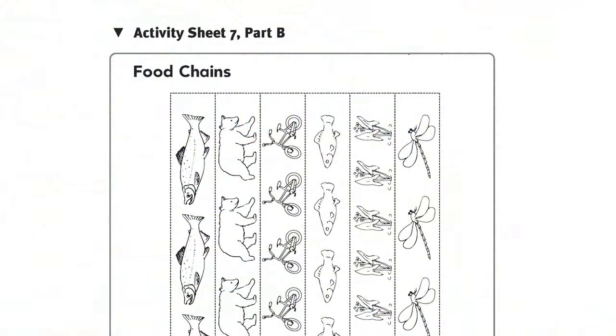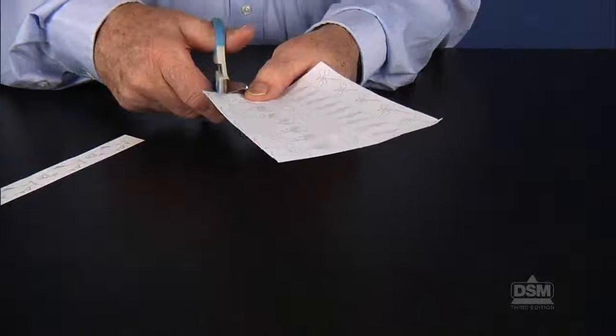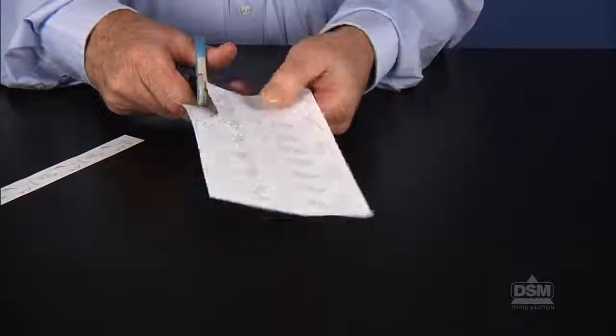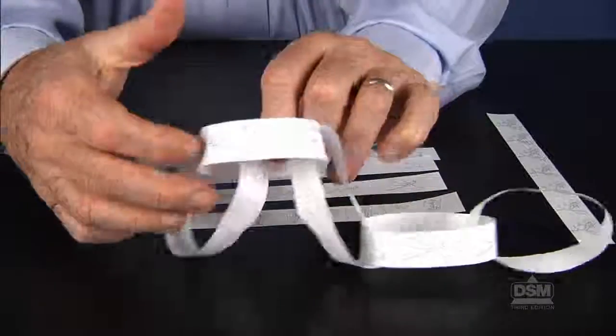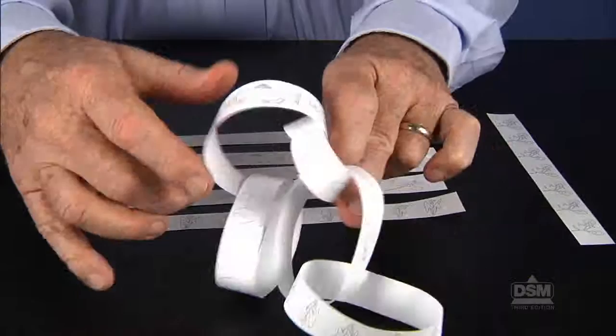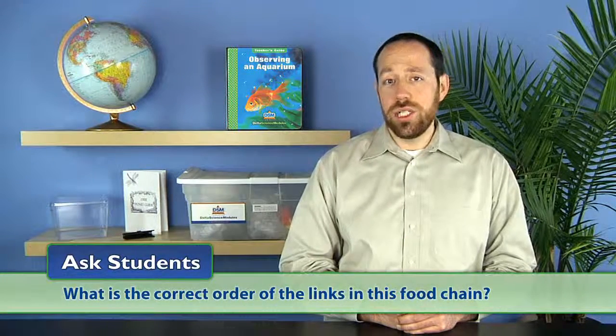Next, distribute a copy of Activity Sheet 7, Part B, and a pair of scissors to each student. Give each team some glue. Instruct students to cut out the strips along the dotted lines and then make a paper chain in the order in which each plant or animal gets eaten. When they have finished, ask students, what is the correct order of the links in this food chain?